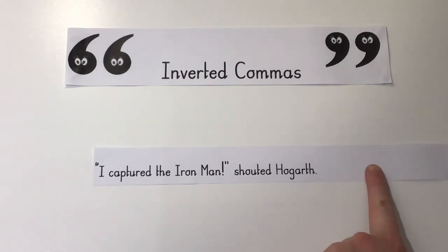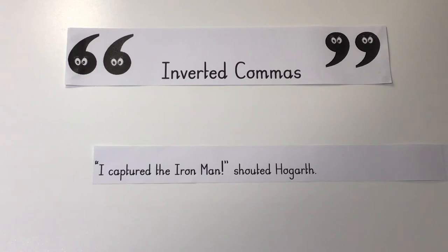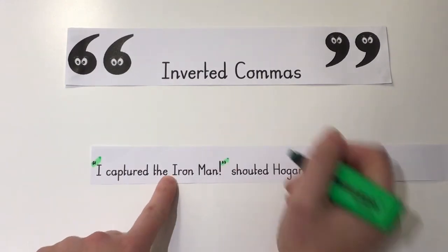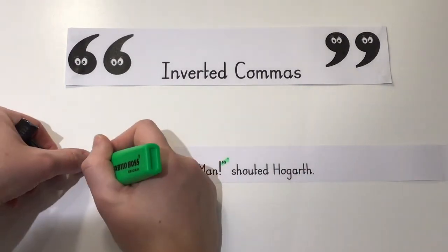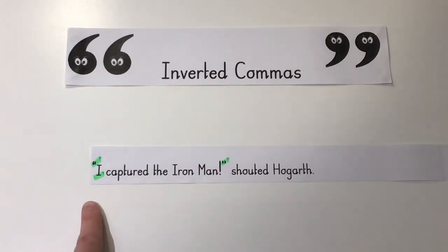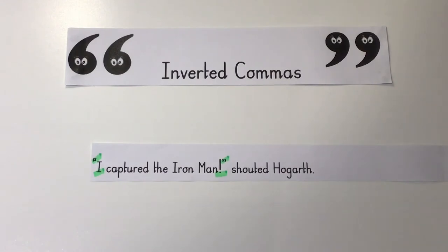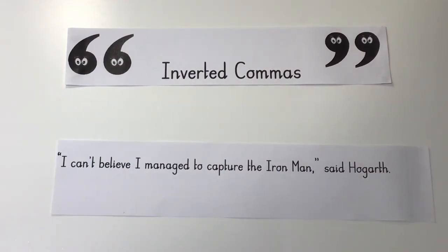Let's have a look at this sentence: "I captured the iron man!" shouted Hogarth. This time Hogarth is shouting — he is exclaiming out loud. We can see that that is the speech, so I have my opening and closing inverted commas around it, my capital letter, and because he is shouting and exclaiming, we show that through an exclamation mark rather than a comma or a question mark.